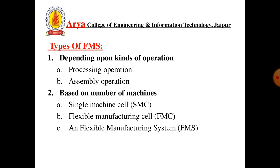Sub-Assemblies are joined permanently by using processes like welding, brazing, soldering, adhesive bonding, riveting, press fitting, etc.